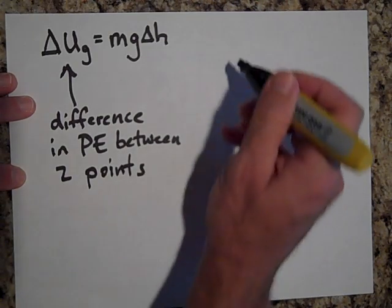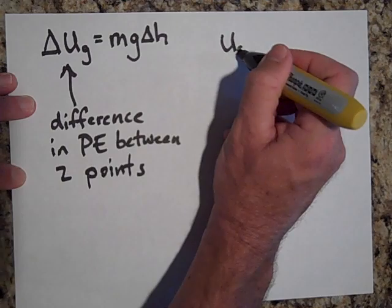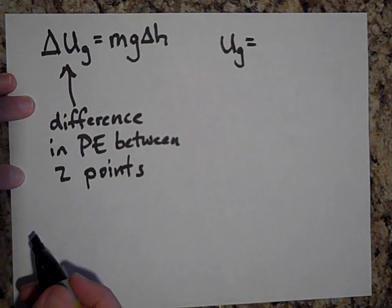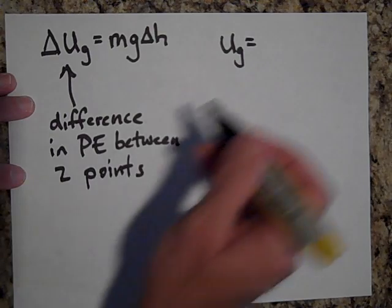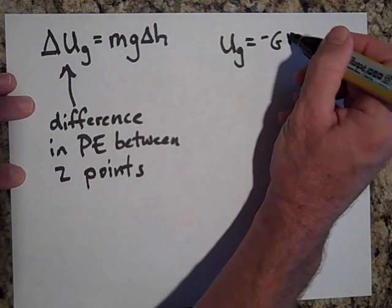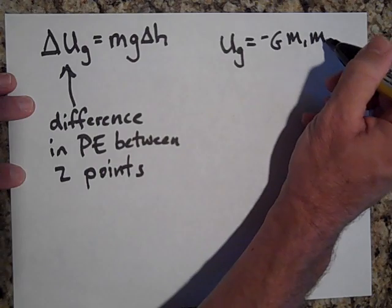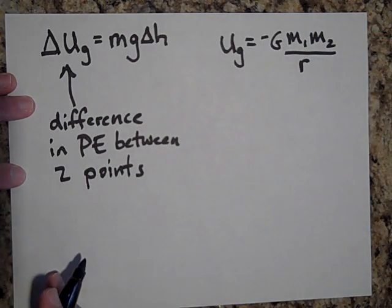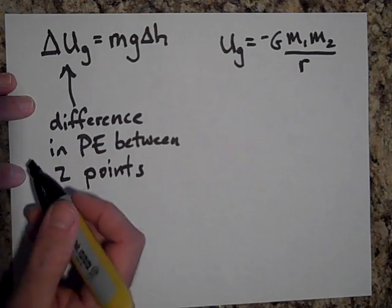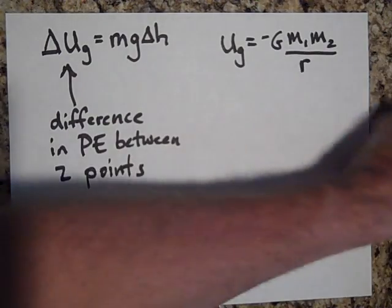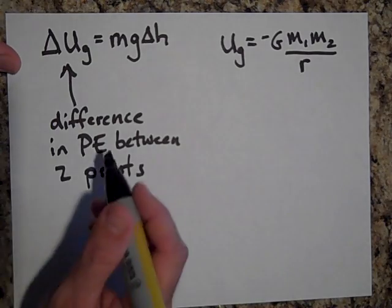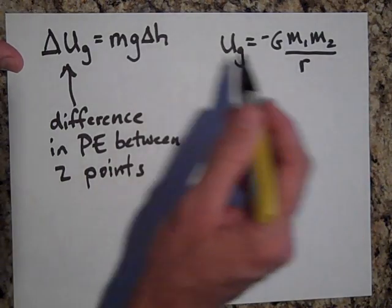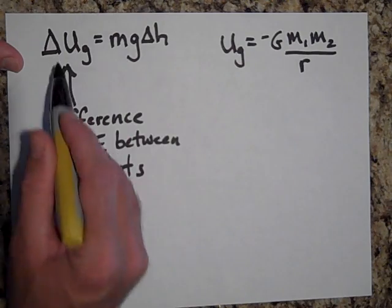The other equation that we'll use this year is that absolute gravitational potential energy, potential energy anywhere in the universe, is equal to negative G M1 M2 all over R but not squared. Just like gravitational forces then, this one is the more general case. This one can only be used near the surface of the Earth.